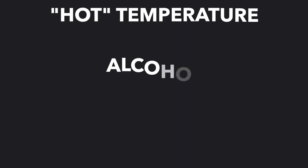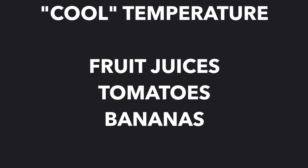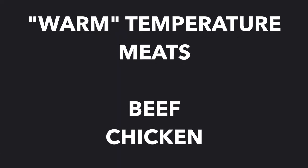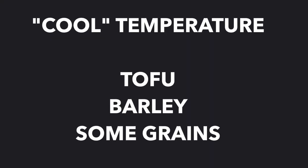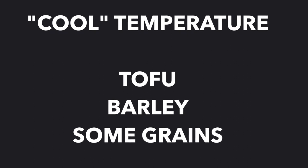Some examples of qi or temperature: hot foods would be something like alcohol, ginger, chilies, or peppers. Cool foods include fruit juices, tomatoes, or bananas. As far as meats go, warmer meats are beef and chicken. And grains, for example, are typically on the cooler side of the spectrum, like barley, tofu, and wheat.